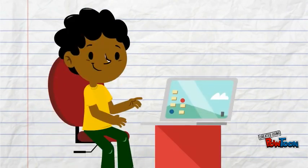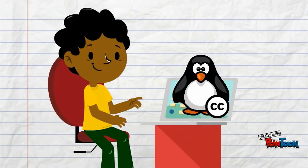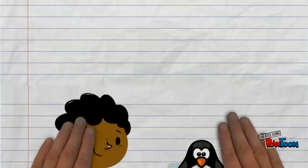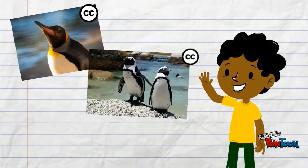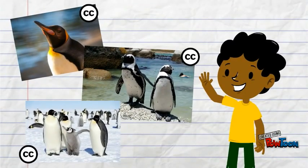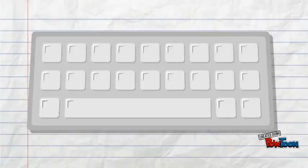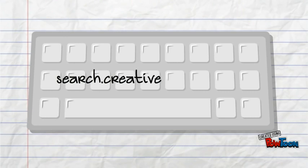If Bobby uses licensed images and follows the artist's rules, he will be obeying the law, not taking anything that doesn't belong to him, and he can use as many pictures as he wants. One good place to find Creative Commons licensed material is by visiting search.creativecommons.org.